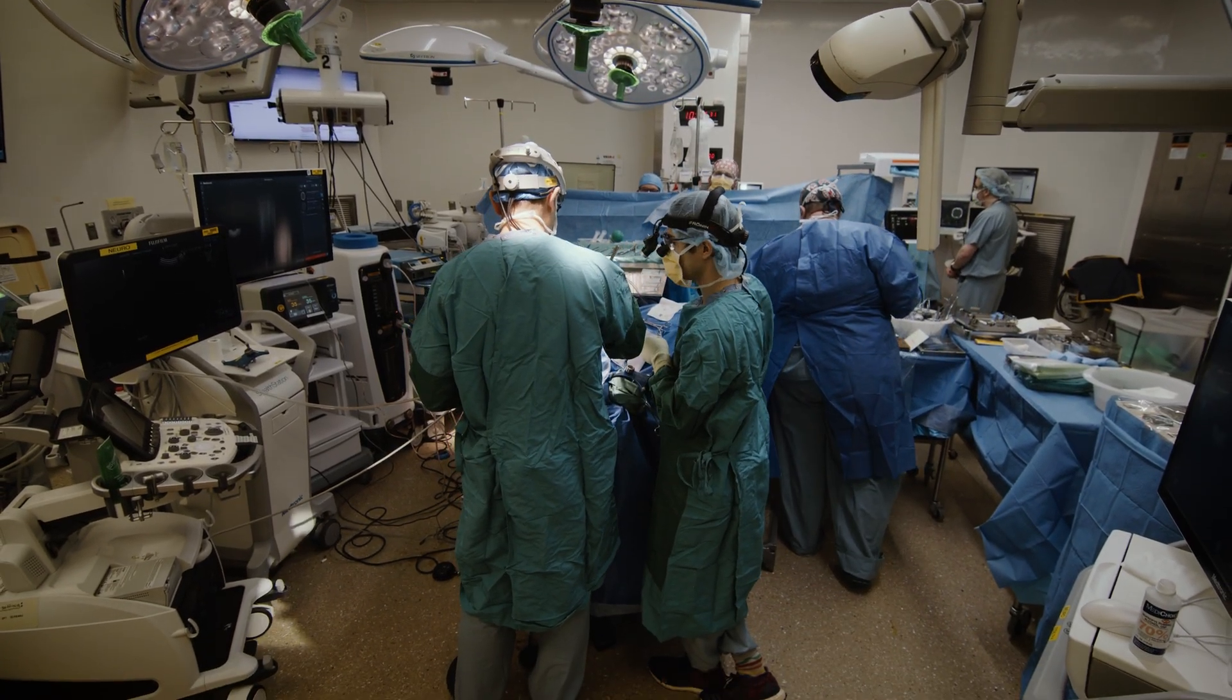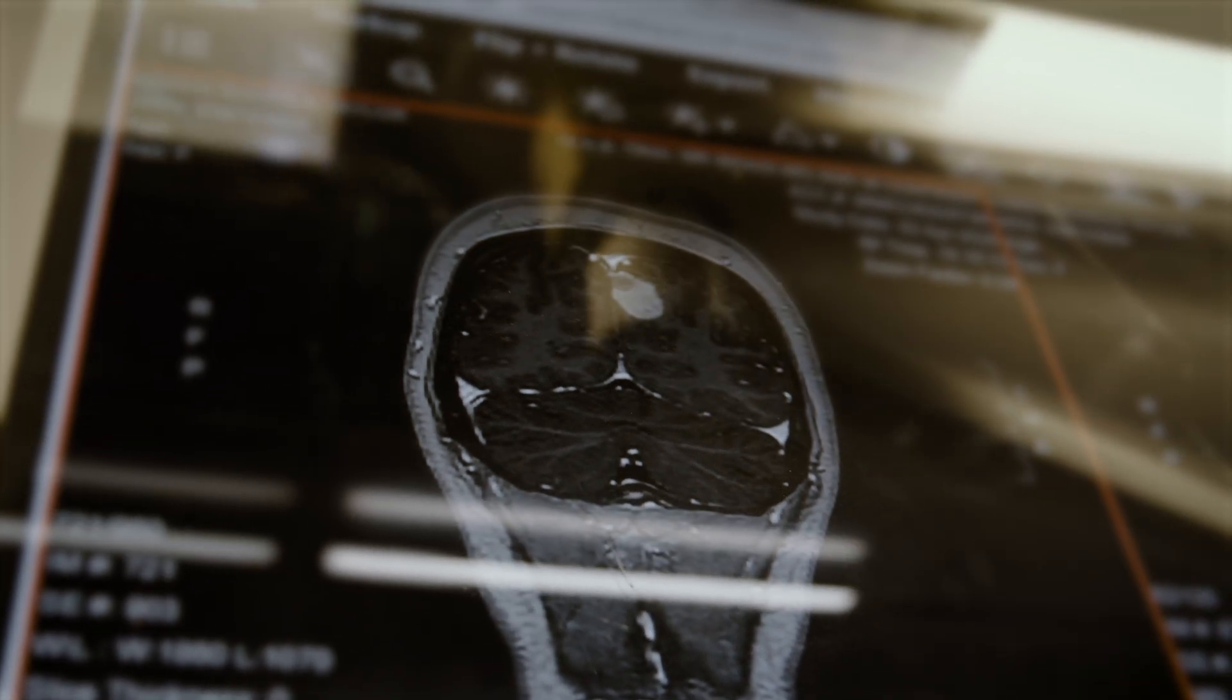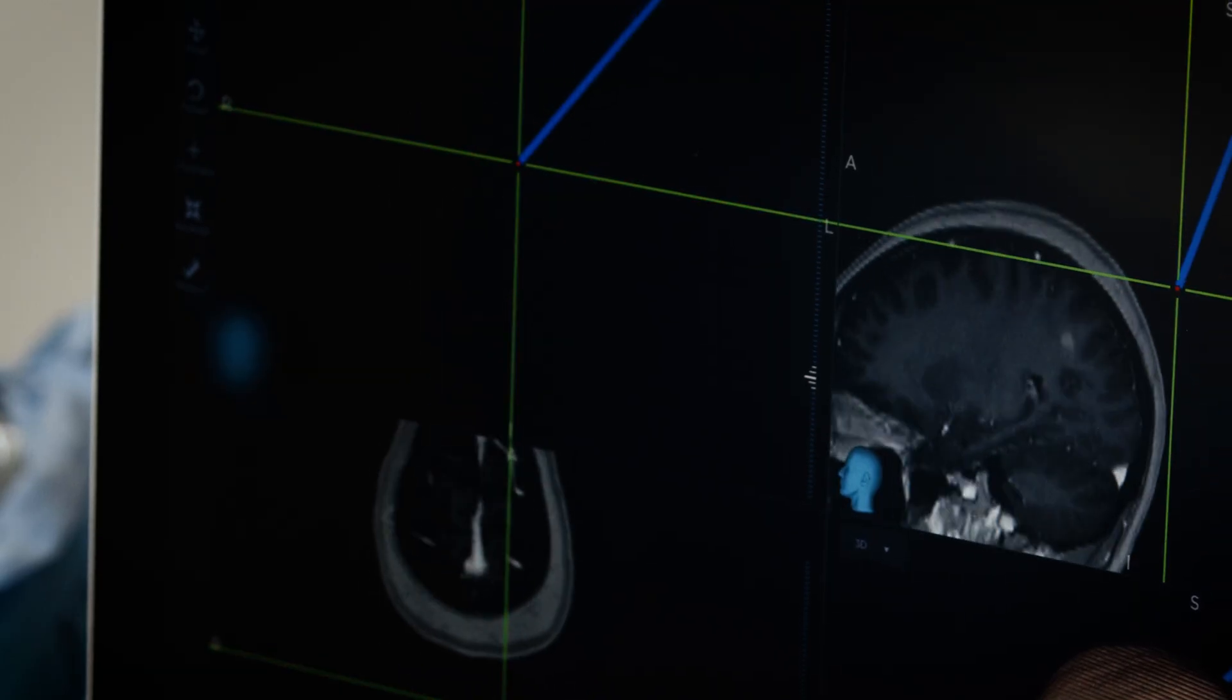A brain-computer interface, just like it sounds, is a way that your brain can communicate with a computer. The brain uses electrical signals from the neurons to control everything we do, everything we move, how we speak, how we think, how we feel.